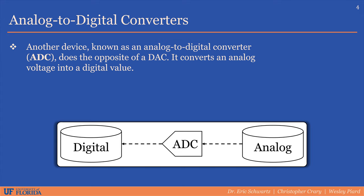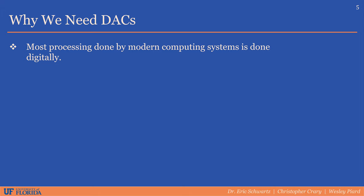Another device known as an analog-to-digital converter, or ADC, does the opposite of a DAC. It converts signals from the analog domain to the digital domain. Most processing done by modern computing systems, such as microcontrollers and FPGAs, is done digitally.